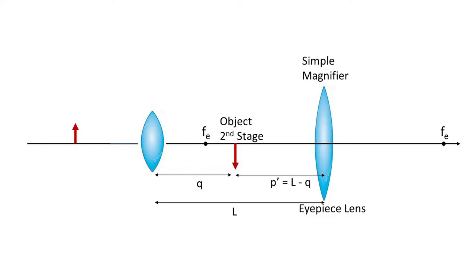In the second stage of a microscope, an eyepiece lens with a focal length longer than the focal length of the objective lens, perhaps a few centimeters, is used as a simple magnifier to observe the image formed by the objective and to further magnify. The image from the first stage becomes the object for the second stage.